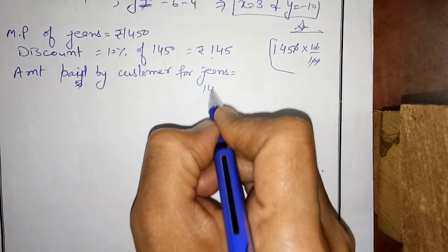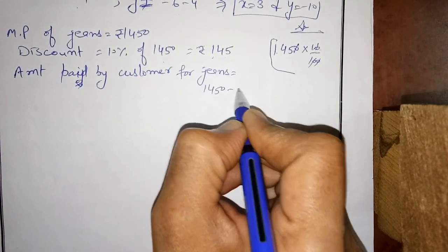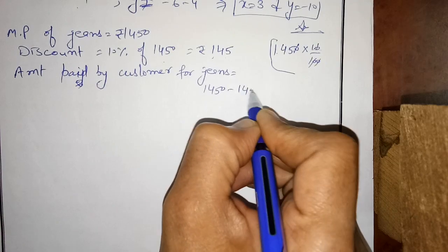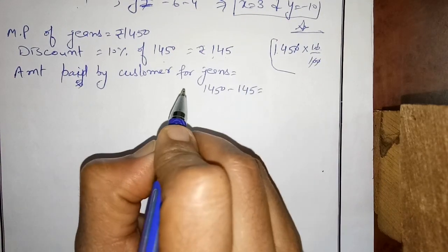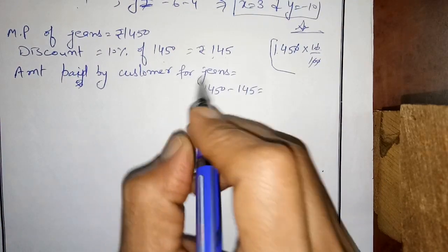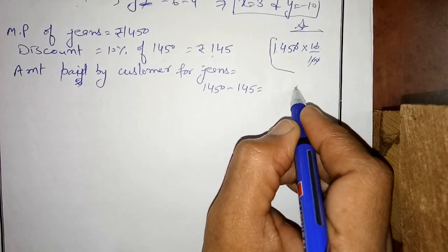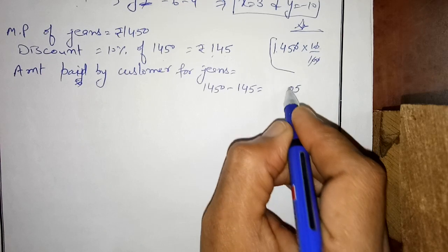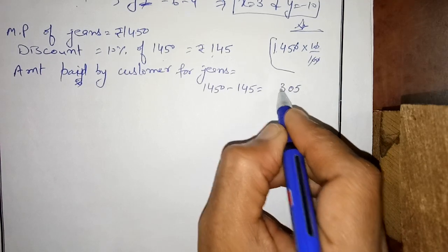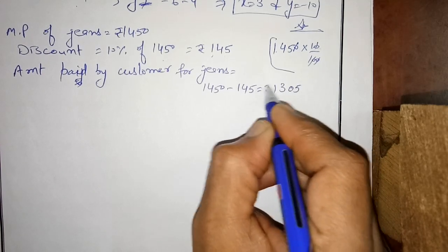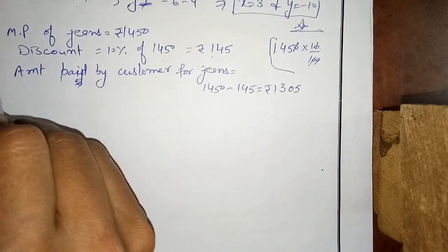Amount paid by customer for jeans: we subtract the discount from Rs. 14.50, so the amount paid comes to Rs. 13.05.